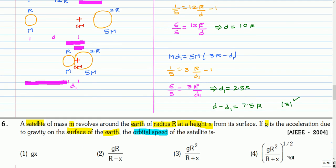This is the next question. A satellite of mass m revolves around Earth of radius r at a height x from its surface. If g is the acceleration due to gravity on Earth's surface, the orbital speed of the satellite is — you can pause and attempt this question.